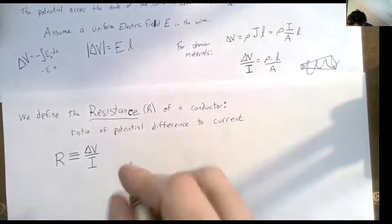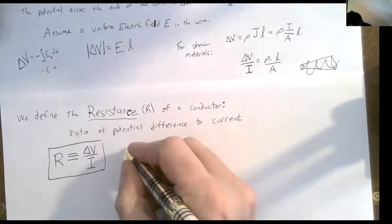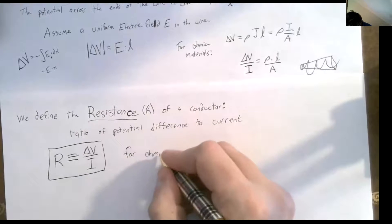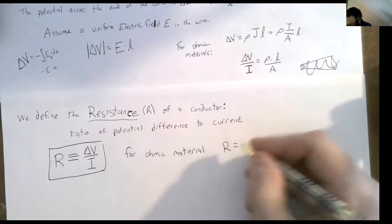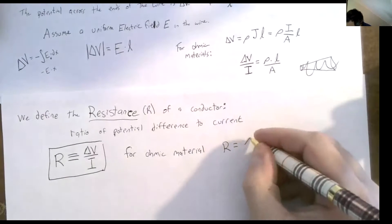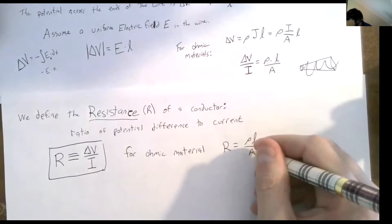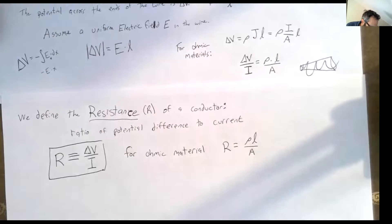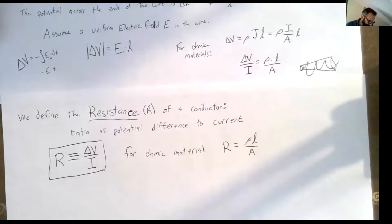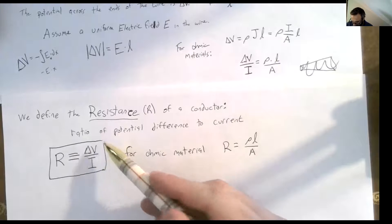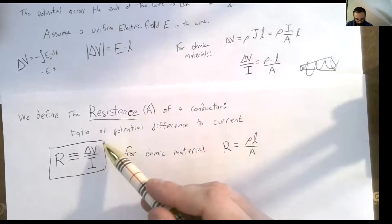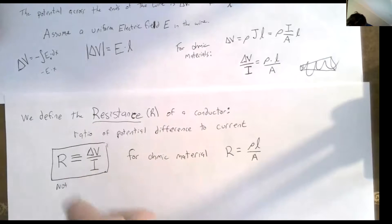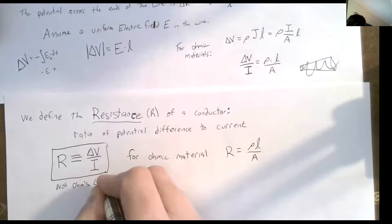For an ohmic material, the resistance equals resistivity times length over cross-sectional area. But delta V over I — that's the resistance for any material. It's important to remember: this is not Ohm's law. V equals IR is NOT Ohm's law — it's just the definition of resistance. Ohm's law is specifically that the electric field is proportional to current density with a constant resistivity.